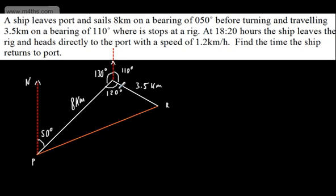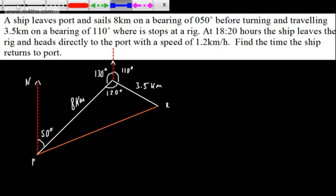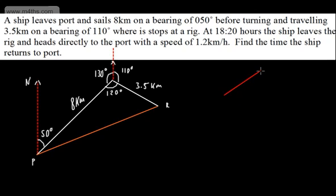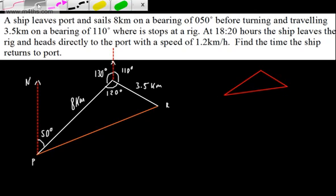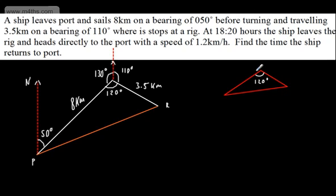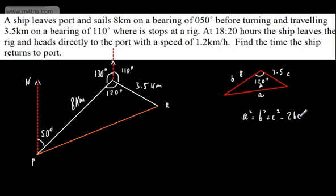So what I've got here is a triangle and I'm just going to sketch a triangle to the side. This doesn't have to be a massively accurate sketch, but it will give us some idea of what we're dealing with. This angle right here is going to be 120 degrees. We've got the length of 8 and we've got the length of 3.5. We're going to use the cosine rule to find this length right here, which I'm going to call A. So this will be angle A, this one B, and this one C. We can say that A squared equals B squared plus C squared minus 2BC cos A.